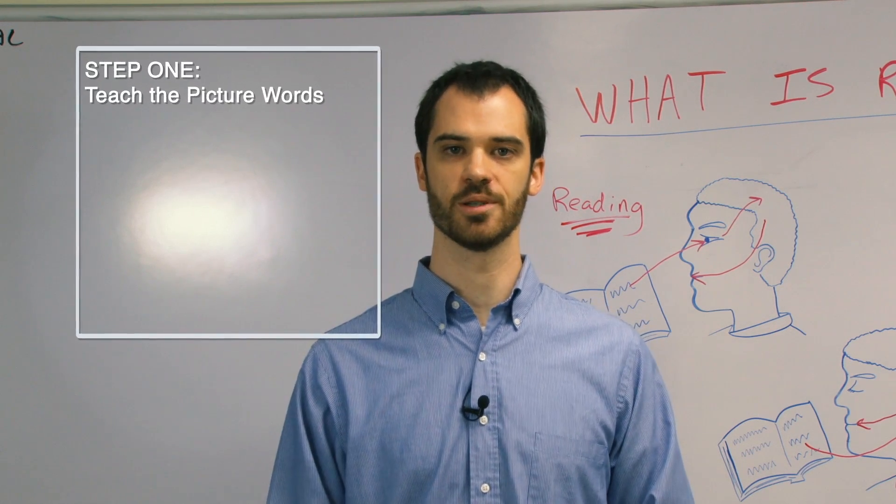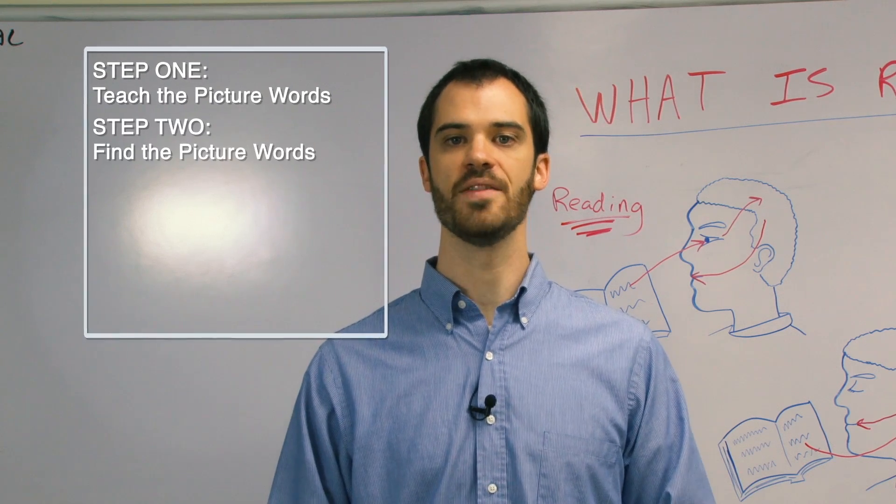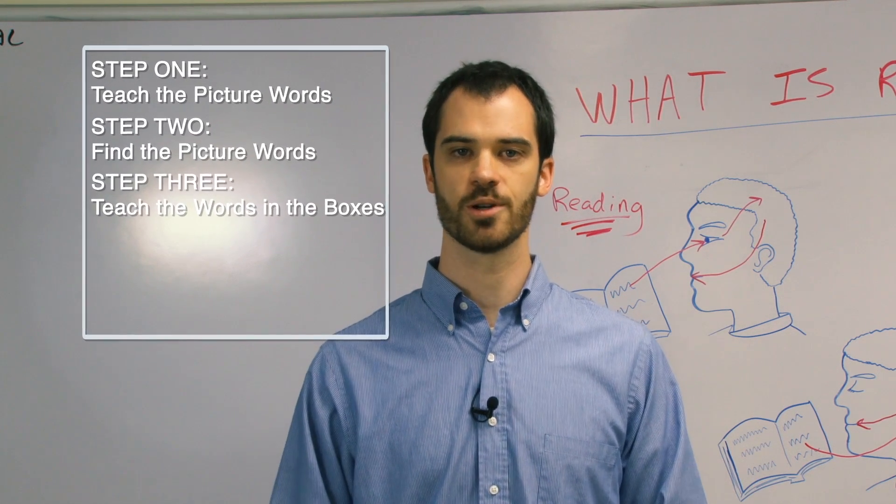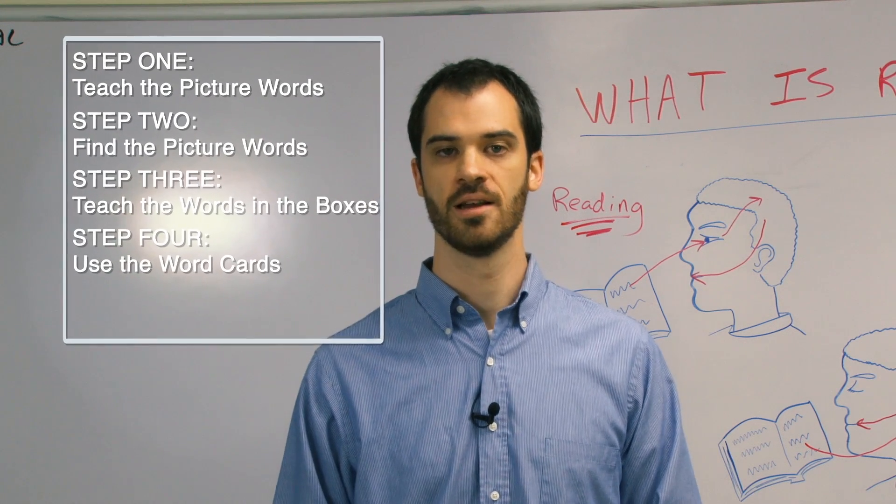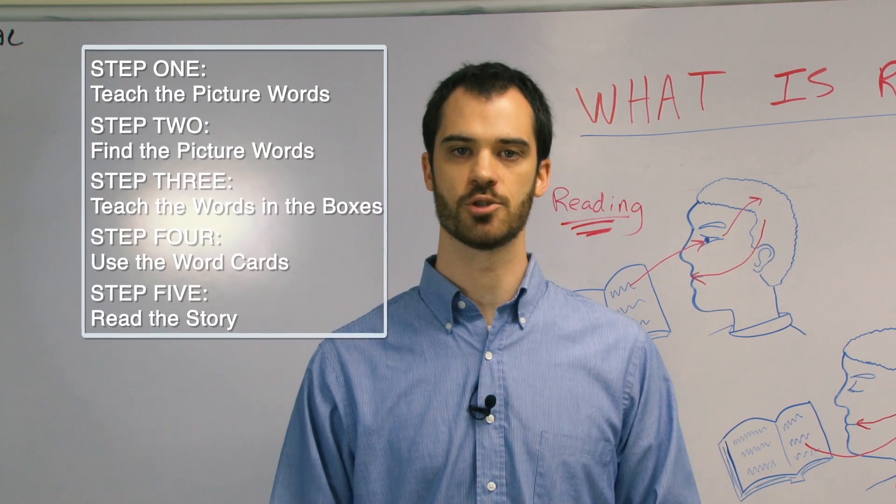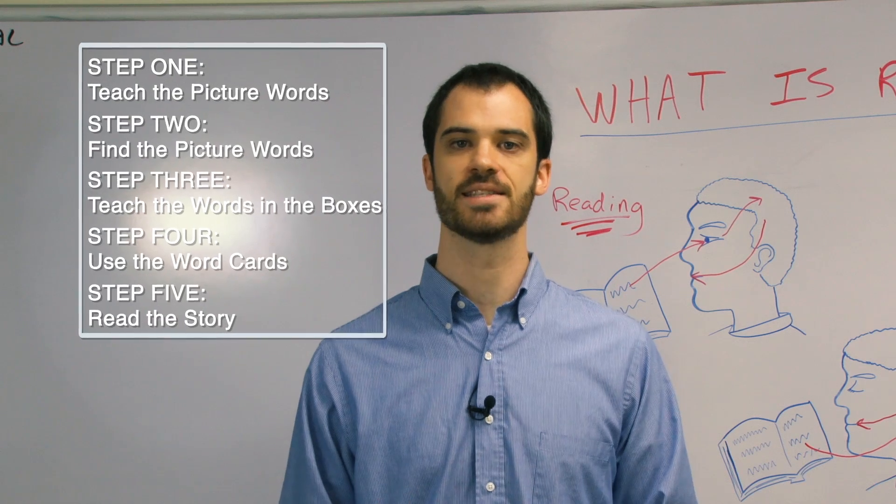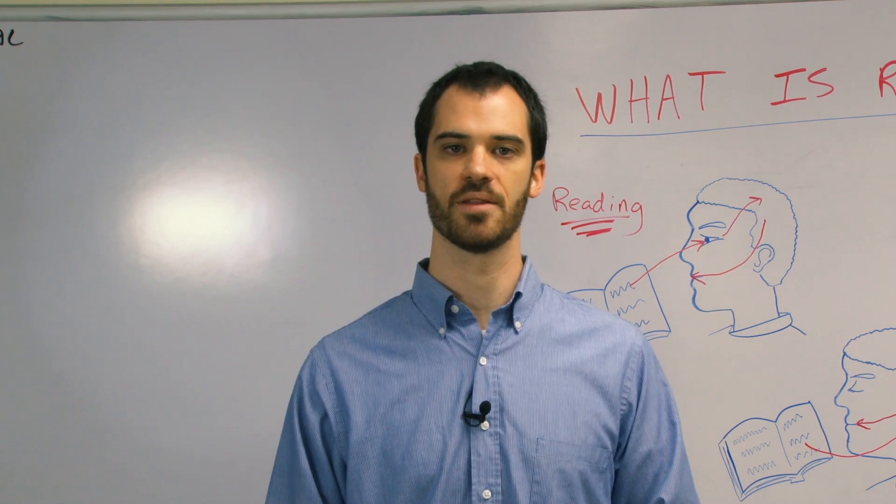Step one, teach the picture words. Step two, find the picture words. Step three, teach the words in the boxes. Step four, use the word cards. Step five, read the story. Again, these steps form the core of the LEI teaching method.